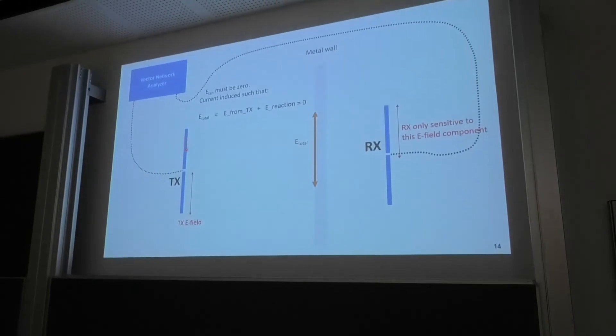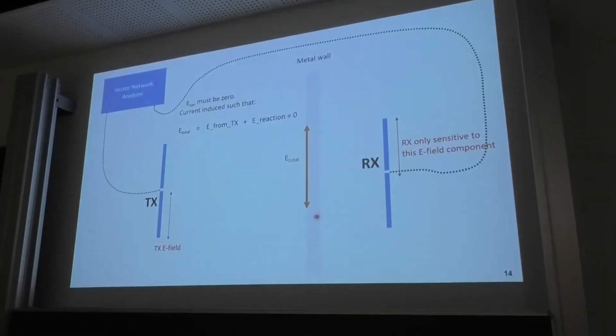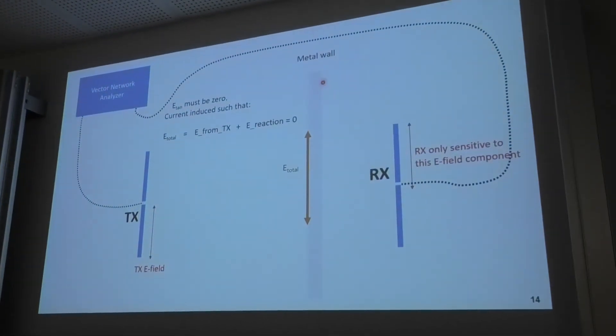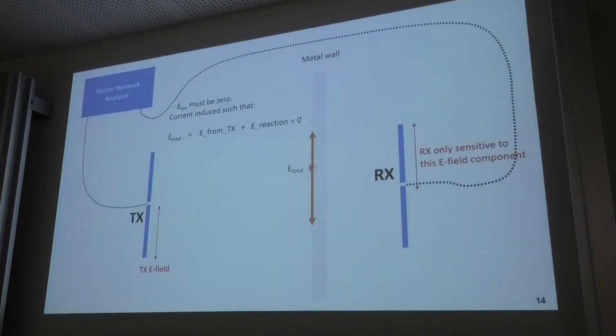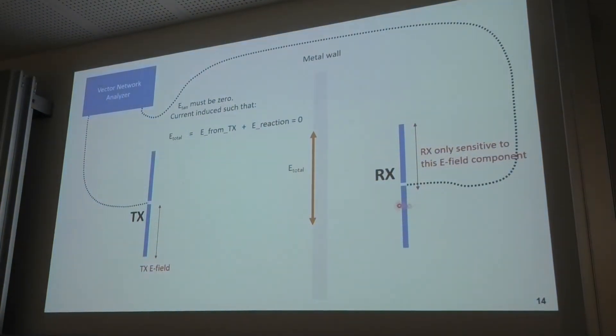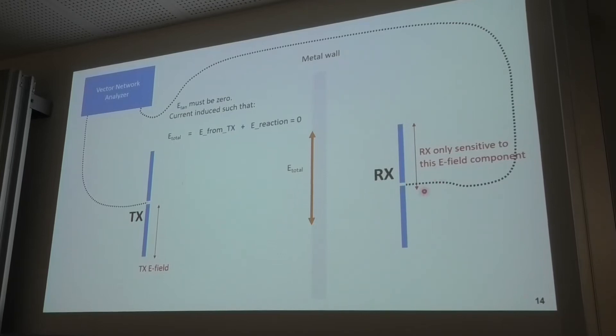We have one field here. This is one antenna. And this is a metal wall. And the E total must be zero here. So, this thing cannot receive anything anymore if there's a metal wall. Because the field from the transmit which comes here and the field from the reaction is zero together. The wall has shielded.